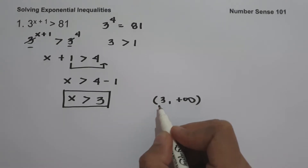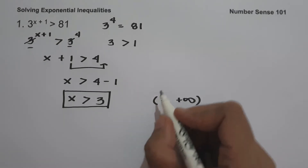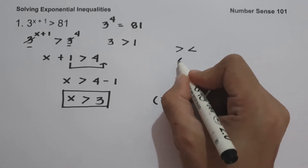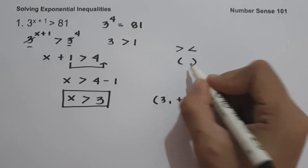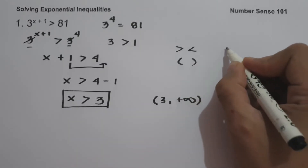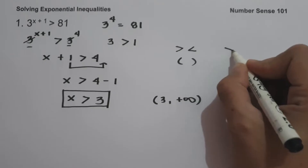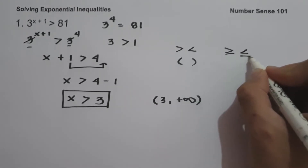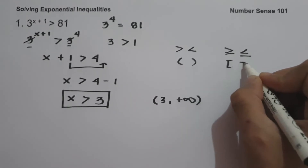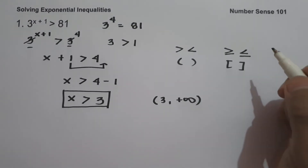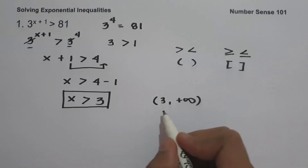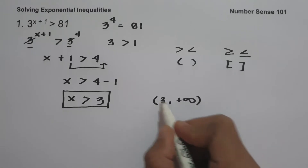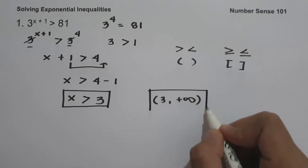Always remember: if the inequality symbol is strictly greater than or less than, we use parentheses. If the inequality symbol is greater than or equal to, or less than or equal to, we use brackets. Therefore, the solution set is (3, positive infinity).